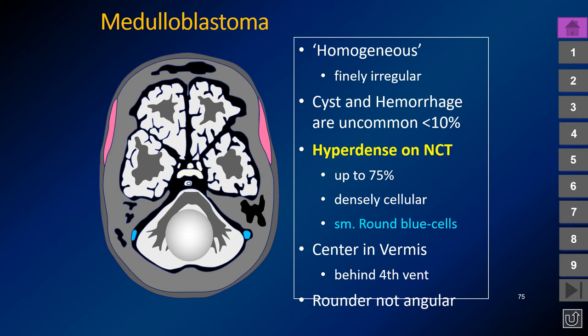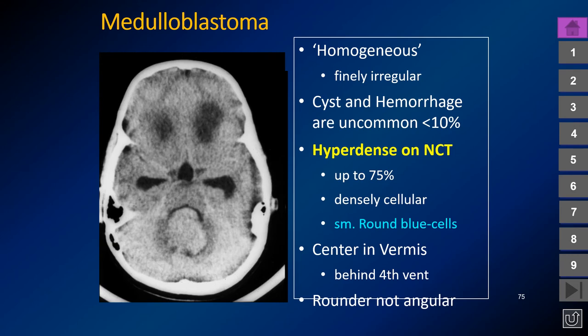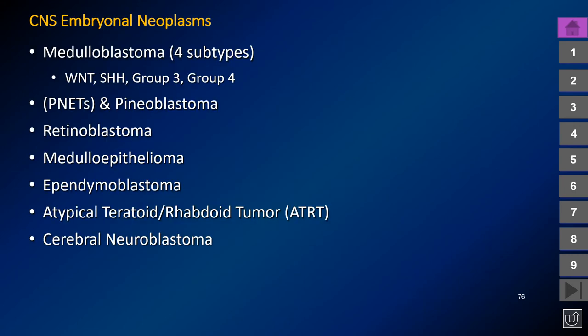About 75% of medulloblastomas are hyperattenuating on non-contrast CT. They are highly cellular small round blue cell tumors, often involving the posterior portion of the posterior fossa arising from the vermis or cerebellar hemispheres. Ependymomas tend to be softer tumors; while they may fill the lumen of the fourth ventricle, they tend to retain its triangular shape. On CT, about three-quarters show homogeneous hyperattenuation, and simultaneous involvement of the ventricle and vermis is strongly suggestive of medulloblastoma.